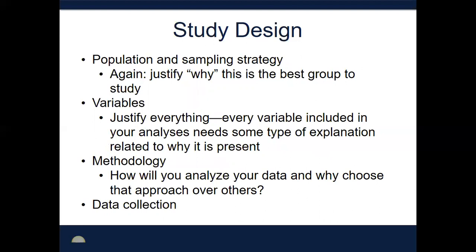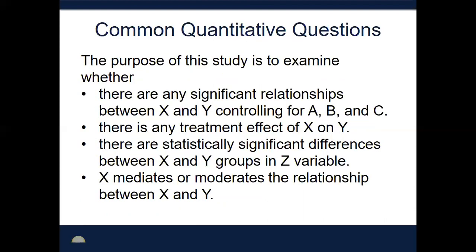As you're thinking about your study design, population and sampling is really critical to consider. Think about why this is the best group to study. Variables need to be justified — if you're going to have a survey that's a hundred questions long, you need to convey to your reader why you're looking at all those measures. You often don't need surveys to be that long; in fact, the shorter the better. Then think ahead about how you're going to analyze your data, and then engage in your data collection.